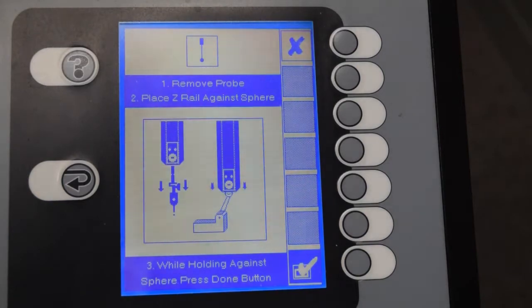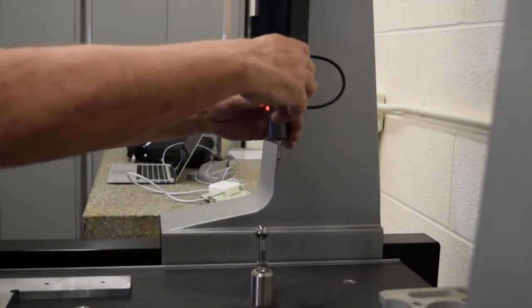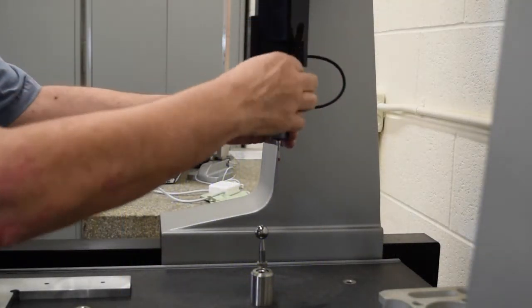Once the origin has been set, the next thing we need to do is calibrate the probe, and the first thing we do here is we select probe type, which is TTP, or touch trigger probe.